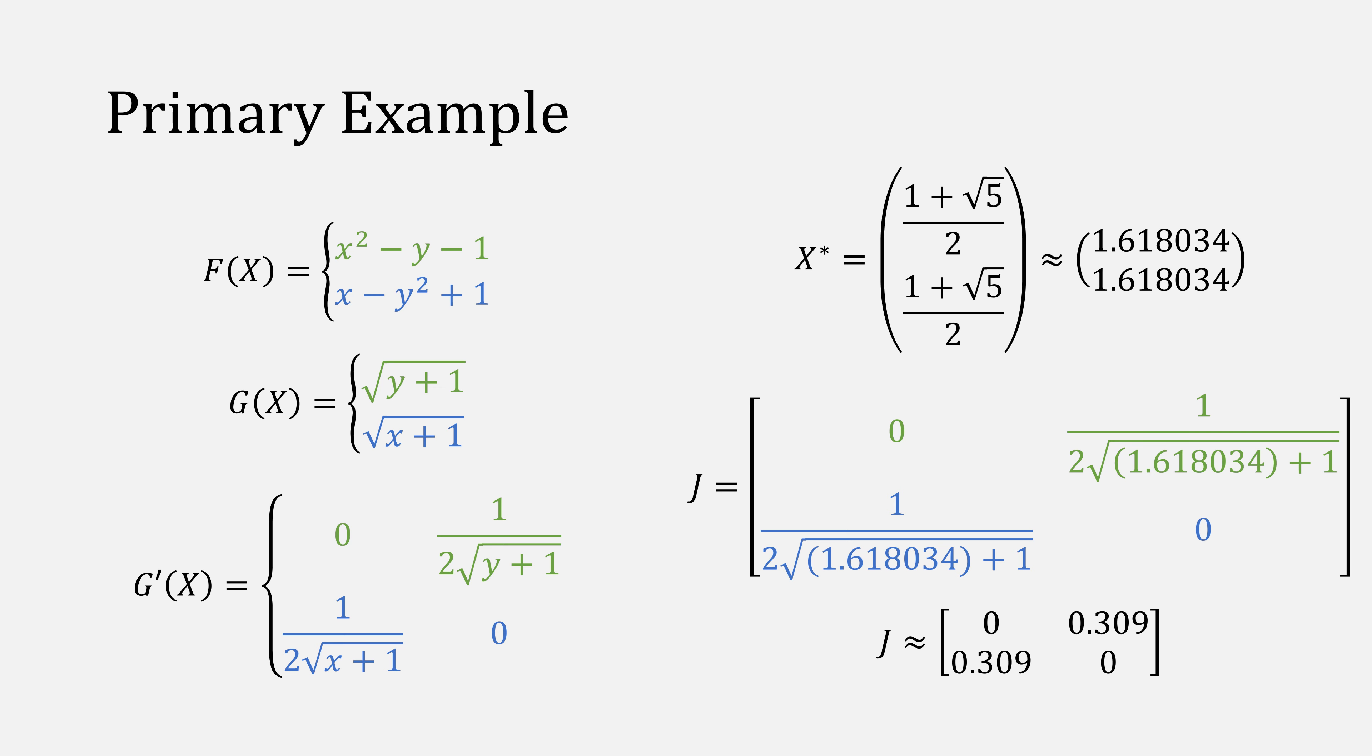We'll use as a primary example the example used from my earlier video on fixed-point iteration for systems of equations, with f of x equal to x squared minus y minus 1, and x minus y squared plus 1.